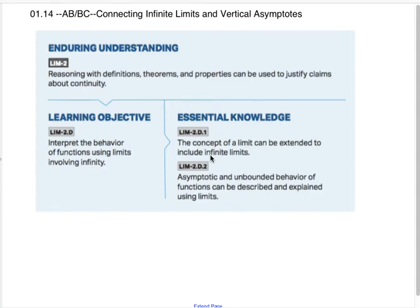This is AP AB and BC Calculus. We're doing Unit 1, Section 14, which is connecting infinite limits and vertical asymptotes. We've actually talked a lot about vertical asymptotes already in previous videos, and several times I've said, wait till we get to Section 14. So here we are.